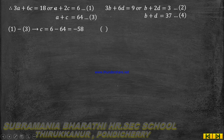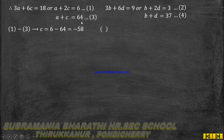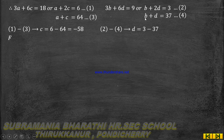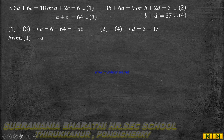Equation 1 minus equation 3: subtract. A cancels out. 2c minus c gives c. And 6 minus 64 gives minus 58. So c equal to minus 58. Then from equation 2 minus equation 4: 2d minus d gives d. And 3 minus 37 gives minus 34. So d equal to minus 34.